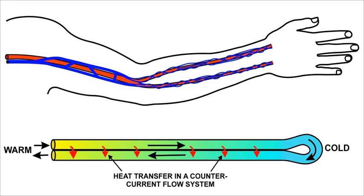Countercurrent exchange, along with cocurrent exchange and countercurrent exchange, comprise the mechanisms used to transfer some property of a fluid from one flowing current of fluid to another across a barrier allowing one-way flow of the property between them. The property transferred could be heat, concentration of a chemical substance, or other properties of the flow. When heat is transferred, a thermally conductive membrane is used between the two tubes, and when the concentration of a chemical substance is transferred, a semi-permeable membrane is used.